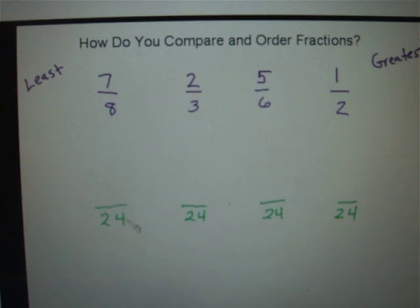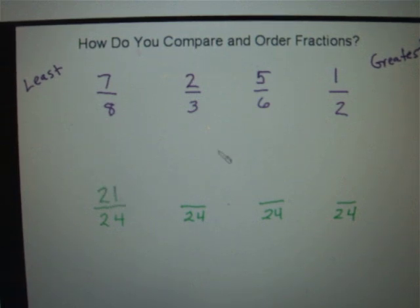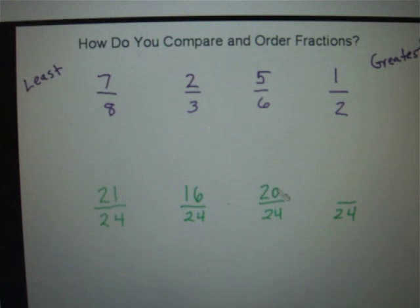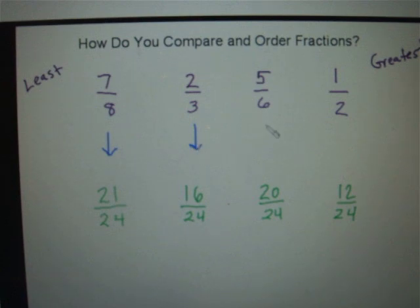To convert 7/8 to twenty-fourths, we multiply 8 by 3 to get 24, so we multiply the numerator by 3 to get 21. We multiply 3 by 8 to get 24, so we multiply the numerator 2 by 8 to get 16. We multiply 6 by 4 to get 24, so we multiply the numerator 5 by 4 to get 20. We multiply 2 by 12 to get 24, so we multiply the numerator 1 by 12 to get 12. Now we've created equivalent fractions and the denominator in each case is 24.